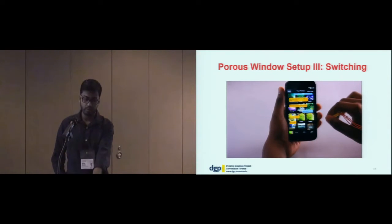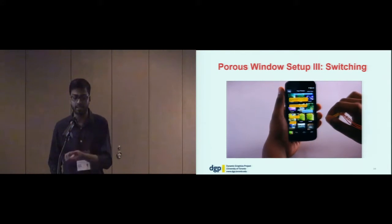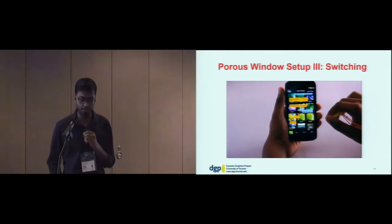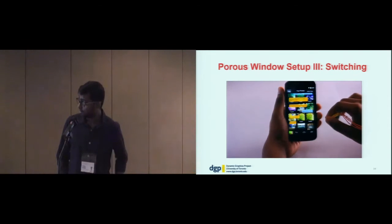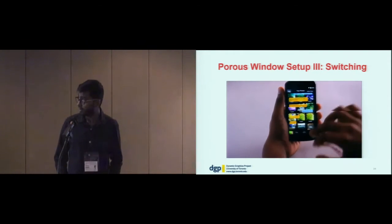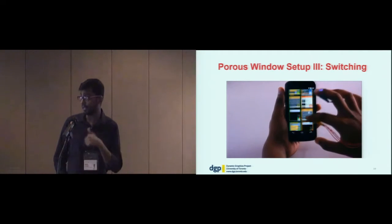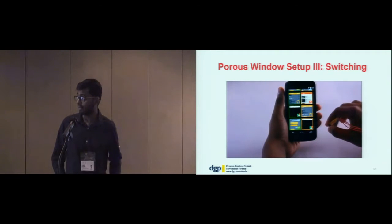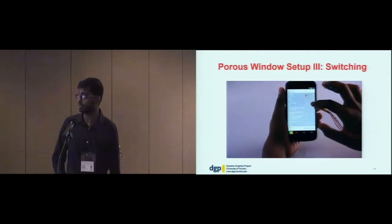The third scenario: if the user has an app pairing that is already open but not on screen and wants to switch to that pairing, we use the window switcher invoked using the middle finger. The user invokes the window switcher, sees pairs of apps, selects one, and — for example — maps and songs are open together.